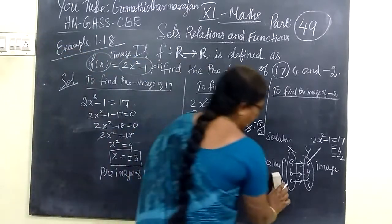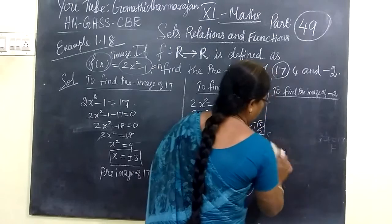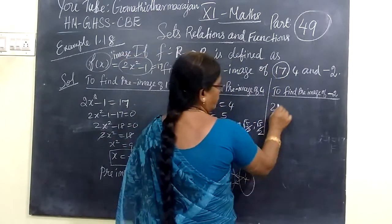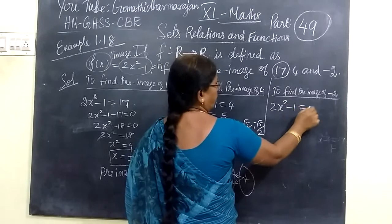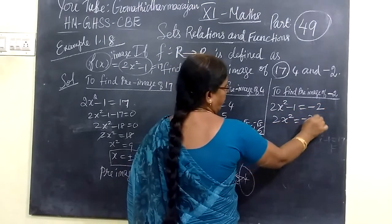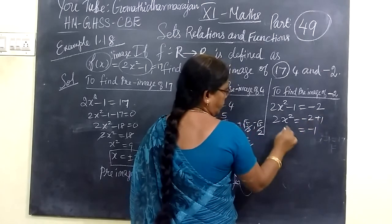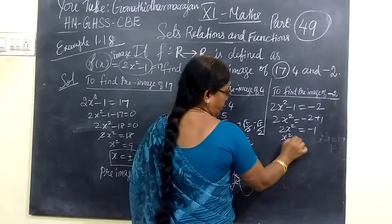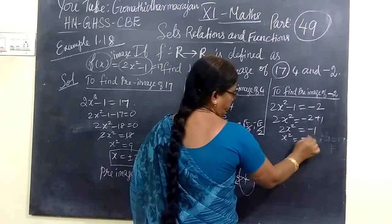For the next one, we find the preimage of -2. So 2x² - 1 = -2, which means 2x² = -1. This implies x² = -1/2.